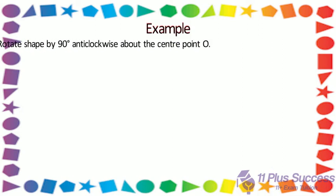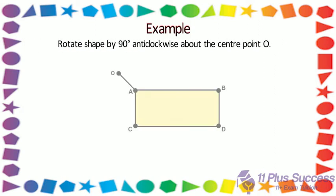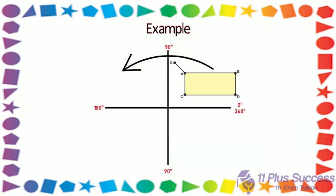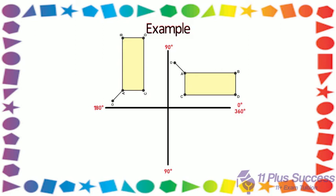Example: Rotate the shape by 90 degrees anticlockwise about the center point O. Place the original image on the scale and check which side the shape will be rotated. As we need to move 90 degrees anticlockwise, the shape will turn towards 180 degrees. When you rotate the image by the origin O, the new rotated image will look like this.